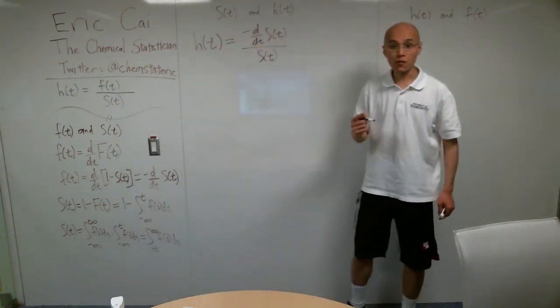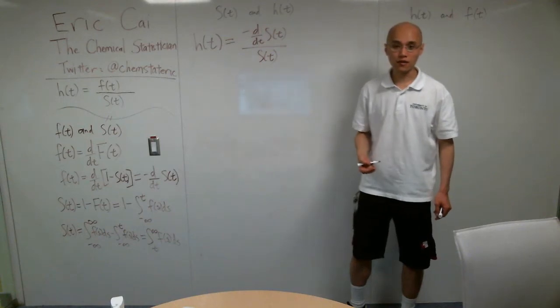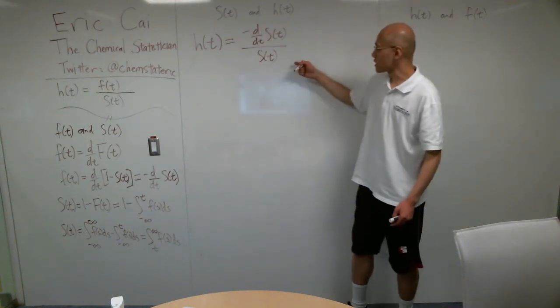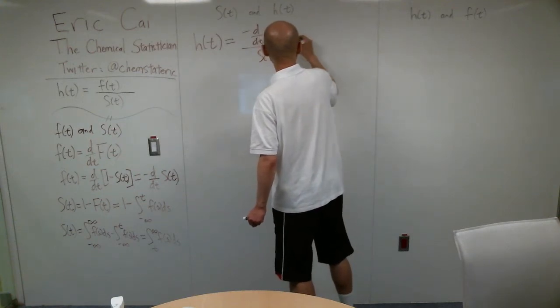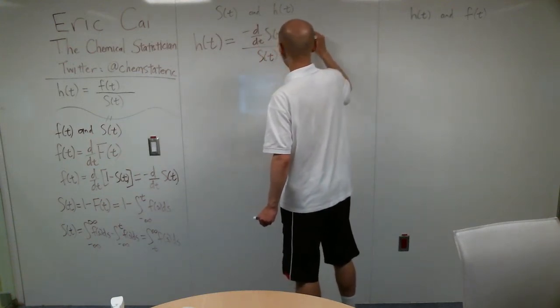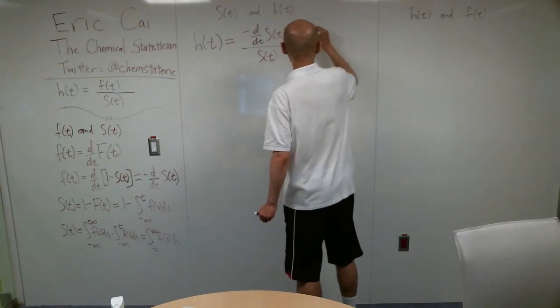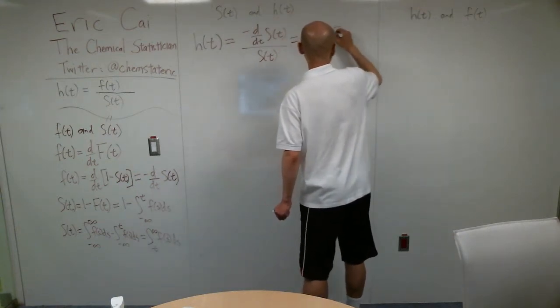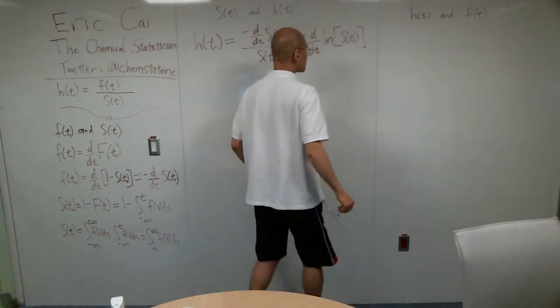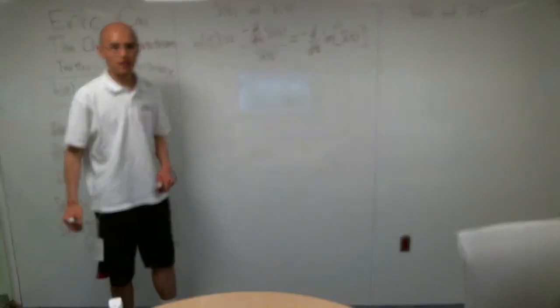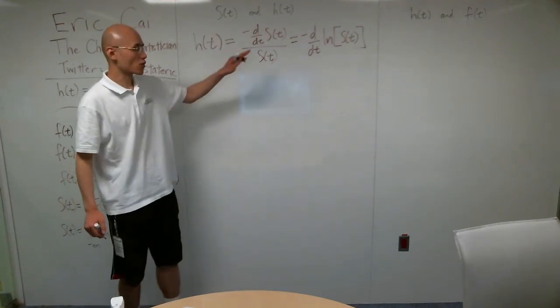Now, if you remember from differential calculus, you should recognize that this is equal to negative of the first derivative of the natural logarithm of the survival function. Okay, so that makes it even more compact.